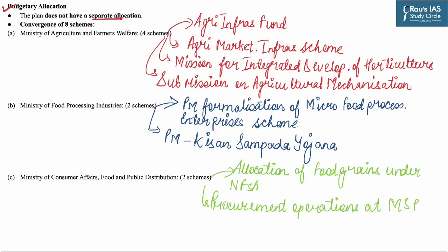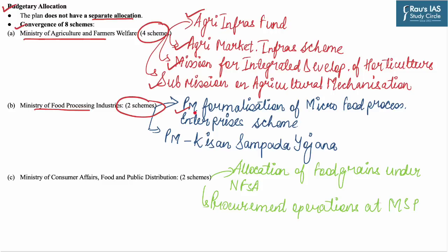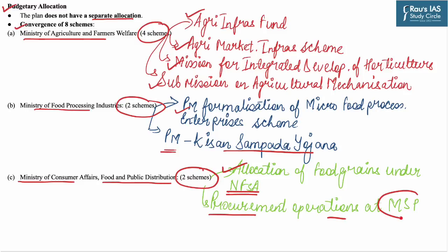Under the new plan, no separate allocation has been given — it will be implemented by convergence of eight schemes. Four schemes are from the Ministry of Agriculture and Farmers Welfare: Agriculture Infrastructure Fund, Agricultural Marketing Infrastructure Scheme, Mission for Integrated Development of Horticulture, and Sub-Mission on Agricultural Mechanization. Two schemes are from the Ministry of Food Processing Industries: Pradhan Mantri Formalization of Micro Food Processing Enterprises Scheme and Pradhan Mantri Kisan Sampada Yojana. The other two are from the Ministry of Consumer Affairs, Food and Public Distribution: Allocation of Food Grains under the National Food Security Act and Procurement Operations at the Minimum Support Price.